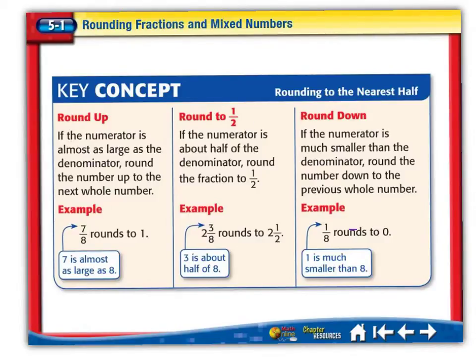Now let's look at rounding to a half. If the numerator is half of the denominator, round the fraction to a half. Let's look at the example. 2 and 3 eighths rounds to 2 and a half, because 3 is about half of 8. We know that a half would really be 4 eighths, and 3 eighths is very close, so we would round that to 2 and a half.